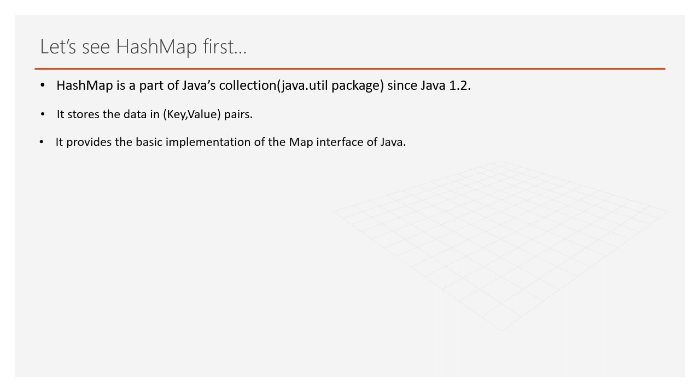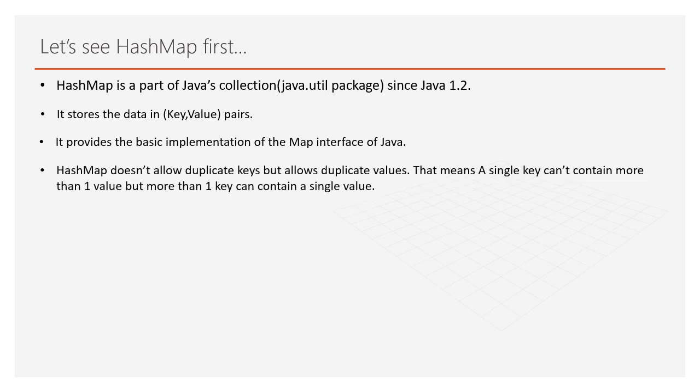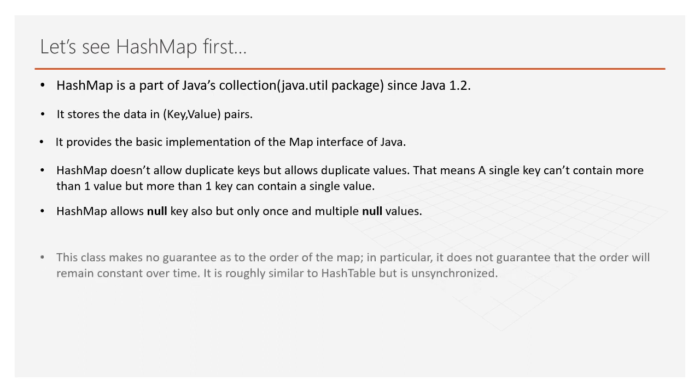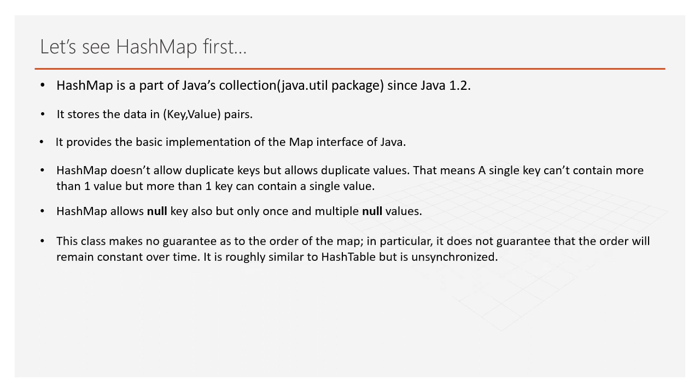HashMap doesn't allow duplicate keys but allows duplicate values. That means a single key can't contain more than one value, but more than one key can contain a single value. HashMap allows a null key but only once, and multiple null values.